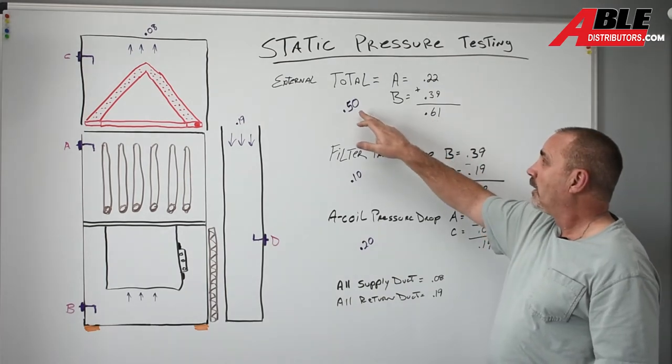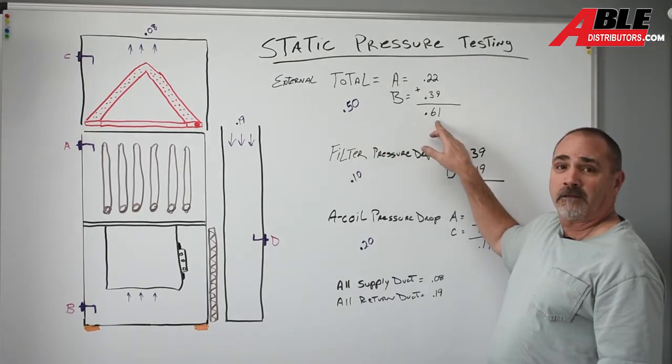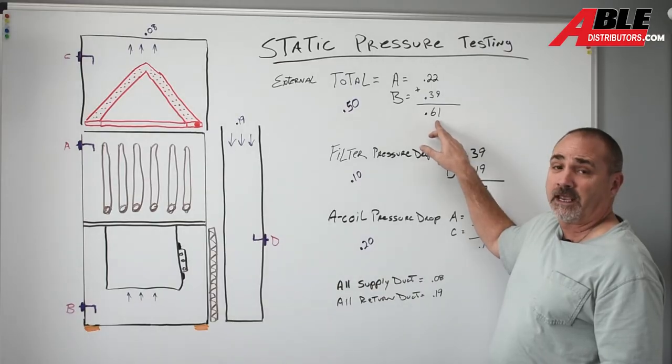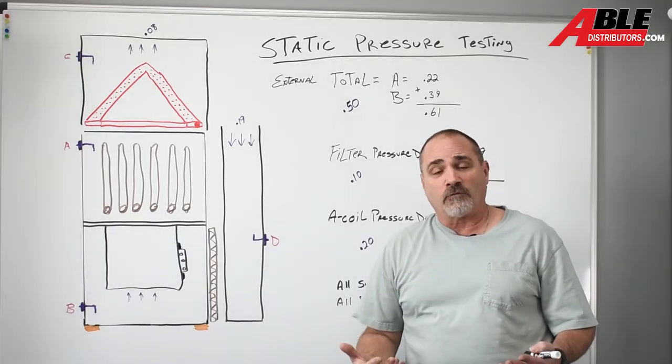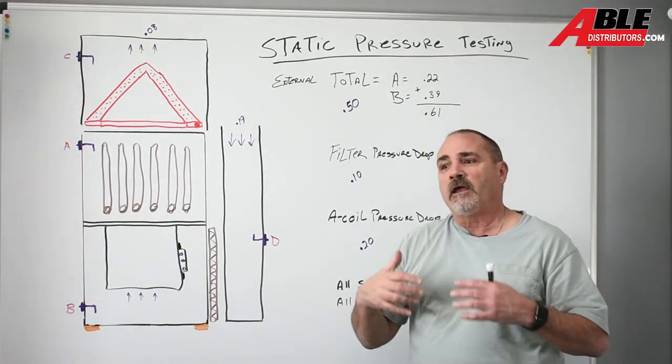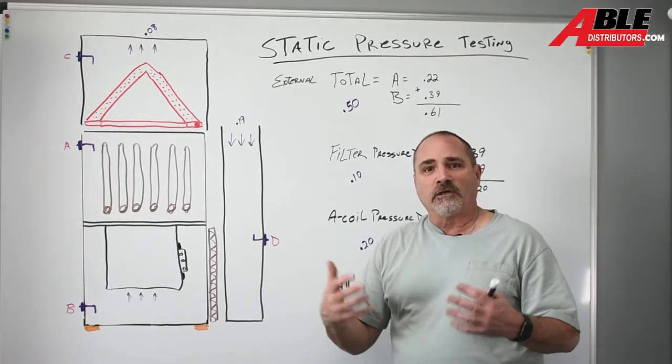The difference between a 0.50 and 0.8 might be 200 CFM, that's half a ton. It might be seven degrees temperature rise. So you can see how the airflow and that static starts to affect it.